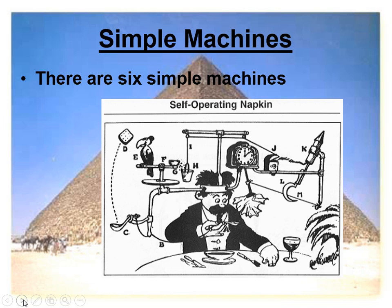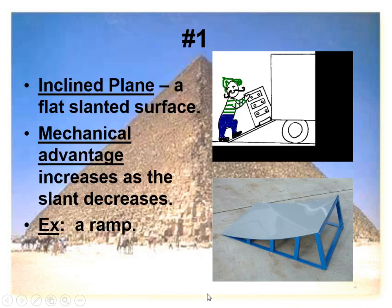There are six simple machines. The first one is an inclined plane, defined as a flat slanted surface — a ramp, for example. As you can see in the picture, if you're putting heavy furniture into a moving truck, it's much easier to use an inclined plane to walk up than trying to lift it straight up. To increase mechanical advantage, you decrease the slant — you don't want it to be steep.